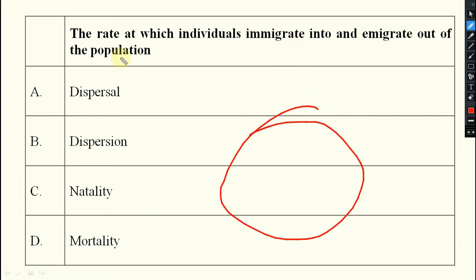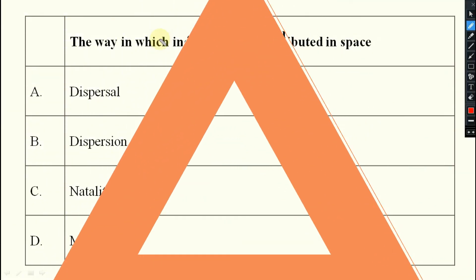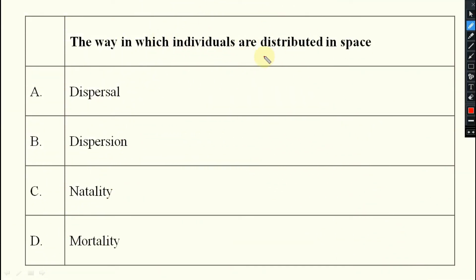Then the rate at which individuals immigrate into and emigrate out. Suppose a place is there, the rate at which populations are coming inside or going outside of the population, that is known as your dispersal. Don't confuse dispersal. Dispersal is the manner in which the populations are distributed, the way in which individuals are distributed in space.